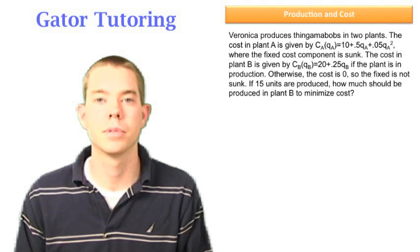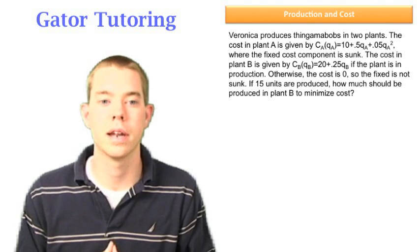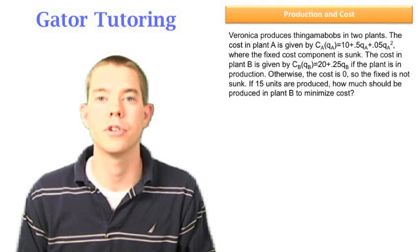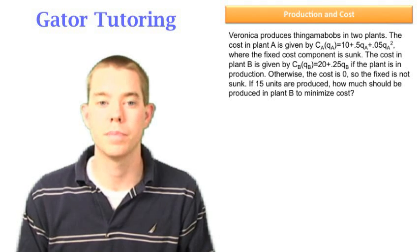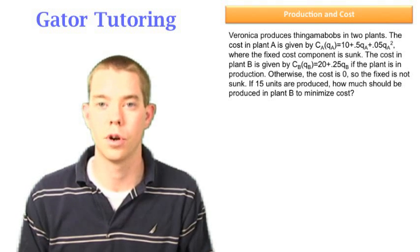Veronica produces thingamabobs in two plants. The cost in plant A is given by CA(QA) = 10 + 0.5QA + 0.05QA², where the fixed cost component is sunk, so we've already paid that $10 and there's no way we can avoid paying it.